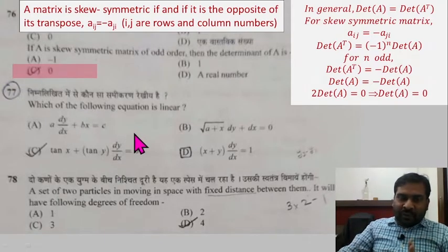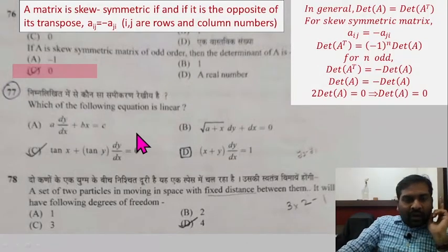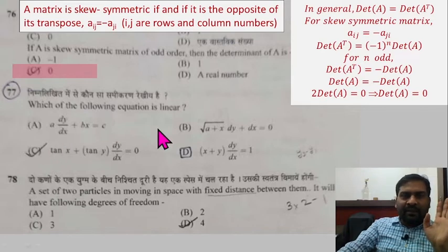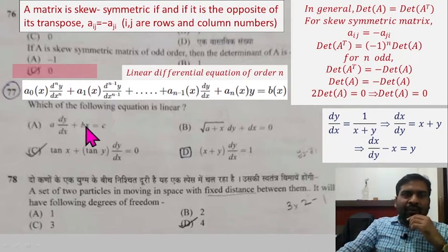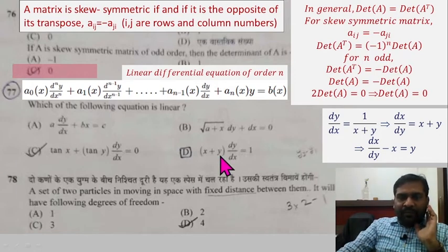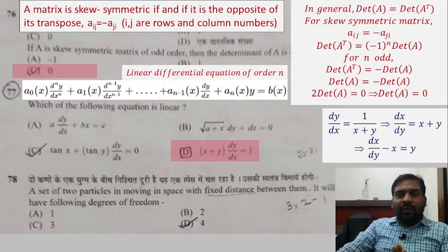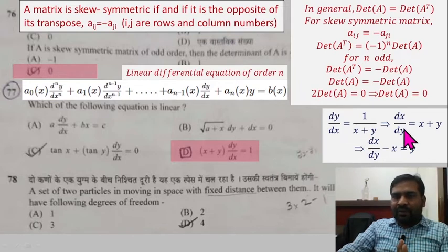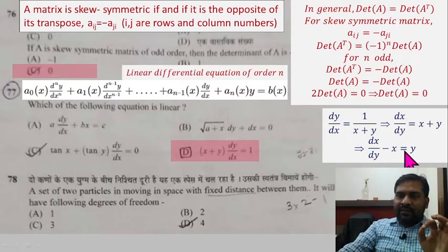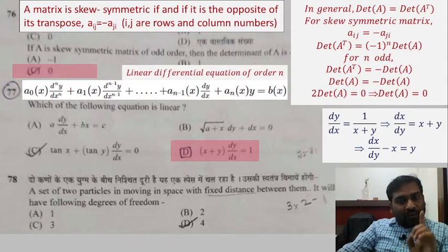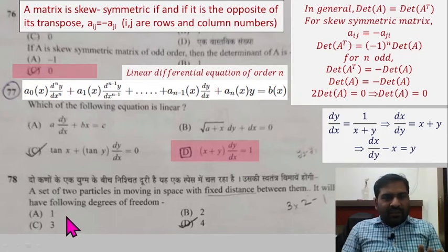Question 77: Which of the following equations is linear? For a linear differential equation, there must be at least one non-zero derivative. Options A, B, C have constants a, b, c whose values are not given. Looking at option D: dy/dx = 1/(x+y) can be rewritten by inverting as dx/dy = x + y, or dx/dy − x = y. This is a linear differential equation of order 1. So option D is correct.